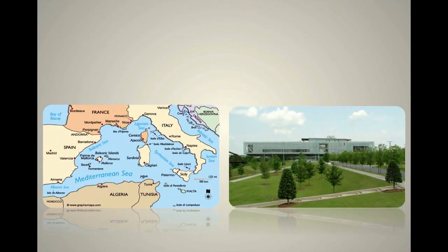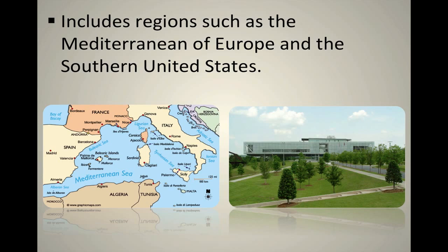Temperate climate regions include the Mediterranean area — I'm talking about the countries, not just the sea: Spain, France, Italy, Greece, that whole Mediterranean Sea region — as well as the southern part of the United States. And as a shout out to the Clinton Library, Bill Clinton did a lot for our state and nation, and there is a presidential library to his credit.